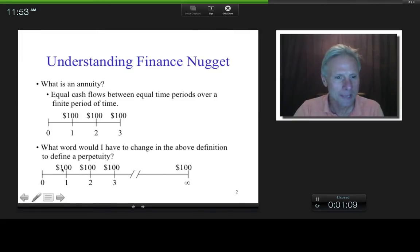So, here we have, again, equal cash flows. So, they're all a hundred dollars. Then, between equal time periods, whatever these time periods happen to be, and it goes on forever.